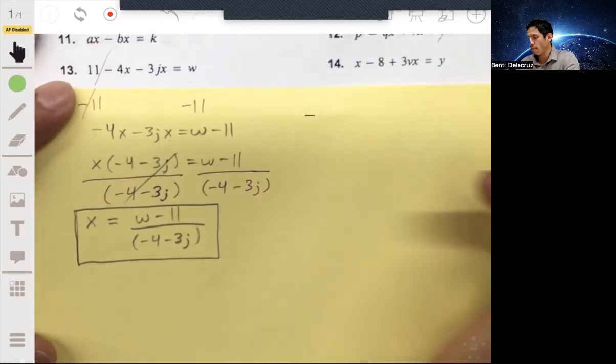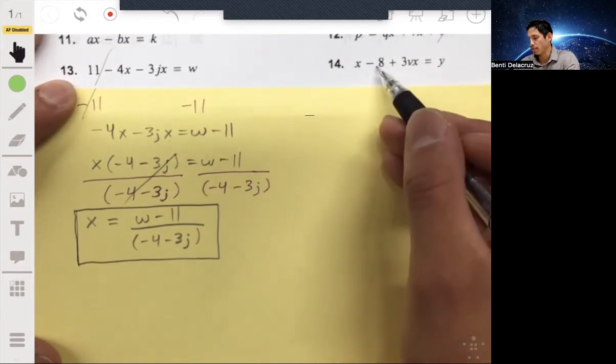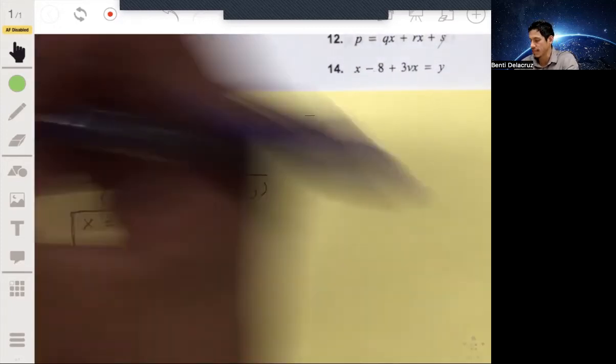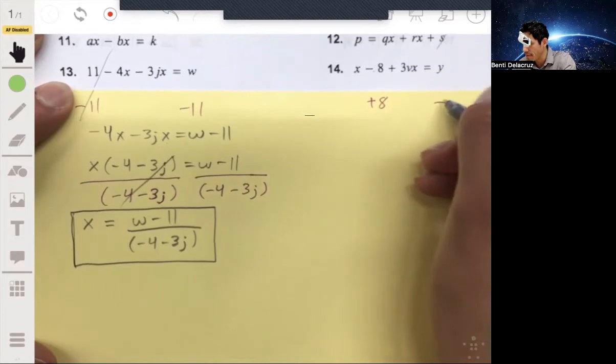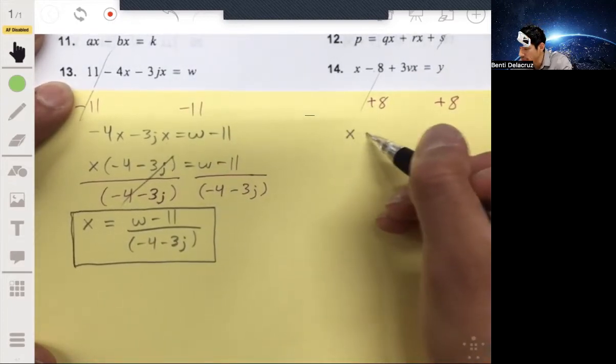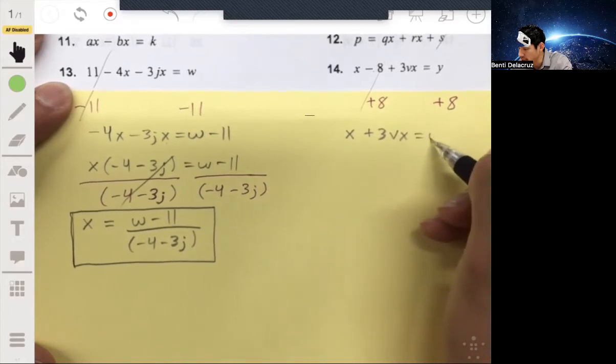Alright, one more. Here we have X minus 8 plus 3VX equals Y. So before we do anything with the X, let's take away or let's add the 8. Let's add an 8 to both sides. Then you'll get X plus 3VX equals Y plus 8.